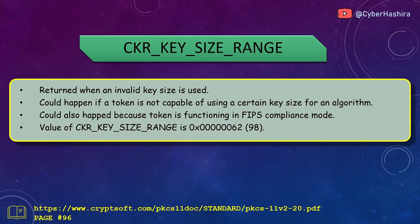CKR_KEY_SIZE_RANGE is returned when a certain key size cannot be used on a token. For example, if a token is set up to operate in FIPS mode, it will only allow keys to be generated within certain limits. Its value is 62 and is on page 96.